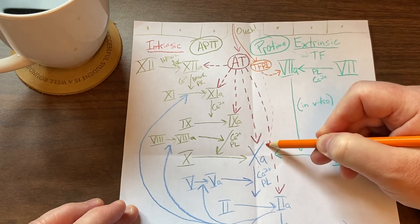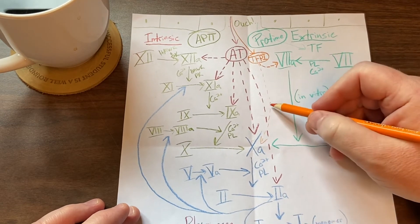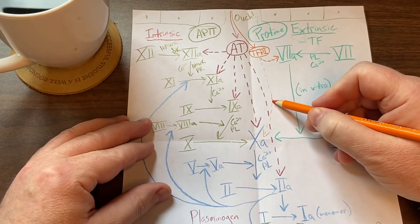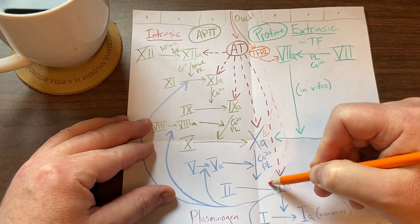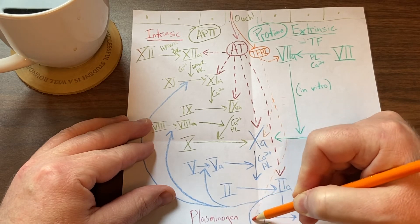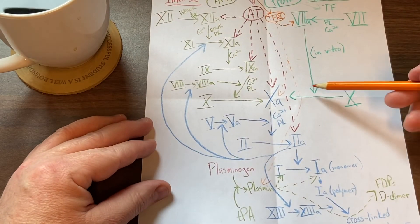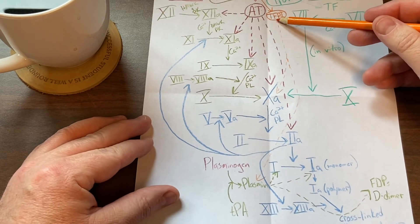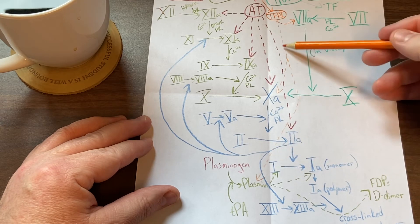And also to plasmin, so it does have a little effect on plasmin as well. Our lines get kind of all over the place here. I just drew a dashed line from tissue factor pathway inhibitor, a lighter one, to represent that the minimal effect also is to deactivate plasmin.